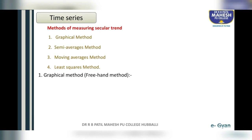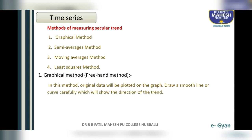The first one is the graphical method, also called the freehand method. In this method, the original data is plotted on the graph. Draw a smooth line or curve carefully, which will show the direction of the trend.